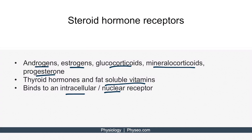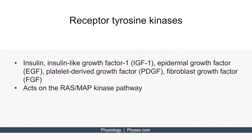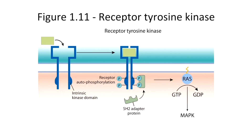Let's move on to the receptor tyrosine kinases. Ligands that bind to receptor tyrosine kinases include insulin, insulin-like growth factor 1, epidermal growth factor, platelet-derived growth factor, and fibroblast growth factor. For Step 1, you need to know that ligands that bind to receptor tyrosine kinases ultimately regulate the RAS-MAP kinase pathway. This is Figure 1.11, which shows a receptor tyrosine kinase, sometimes abbreviated RTK. An RTK acts as a receptor and also has an intracellular enzymatic function. This enzymatic portion contains the amino acid tyrosine, and acts as a kinase — hence the name receptor tyrosine kinase. We can see the intrinsic kinase domain in the figure.